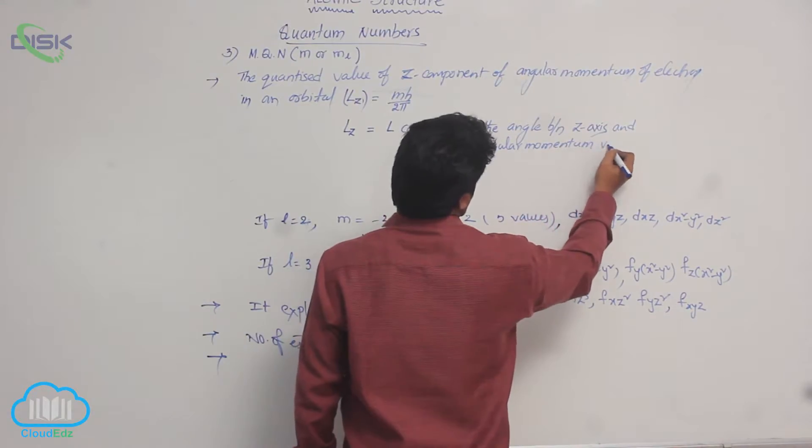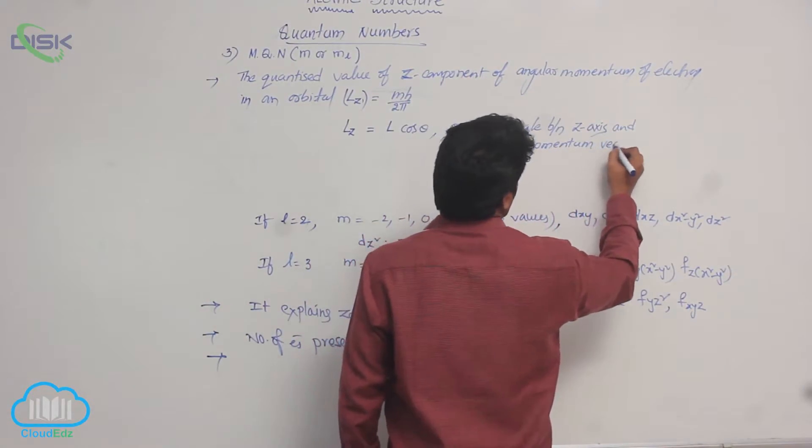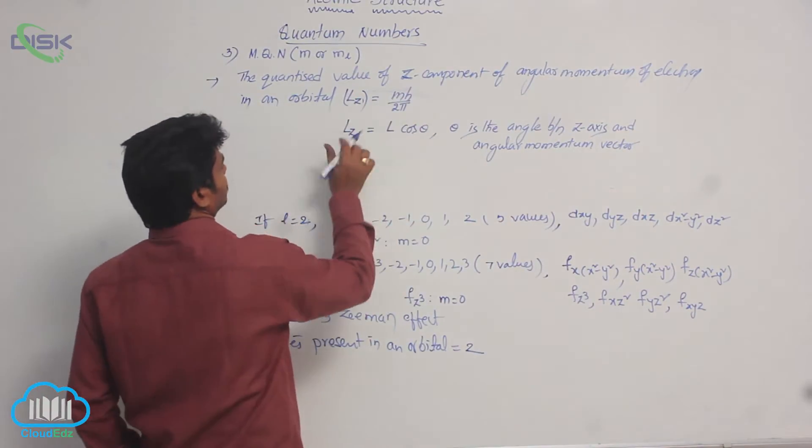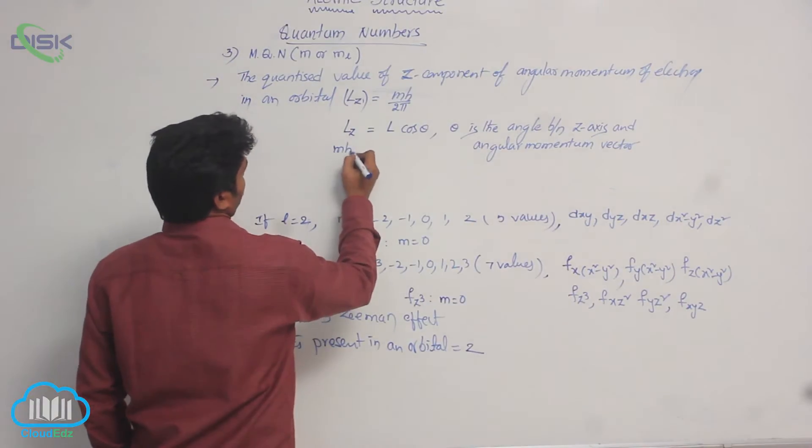Angular momentum vector. It is cos theta. So, substitute Lz value here. m h by 2 pi.